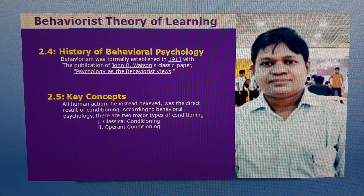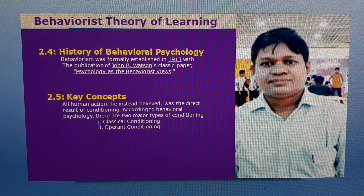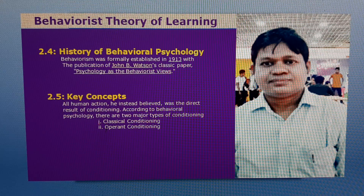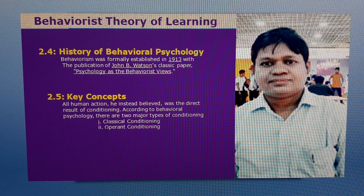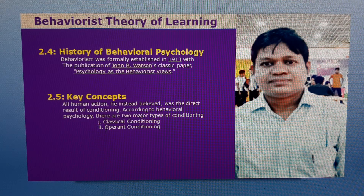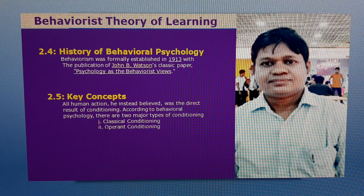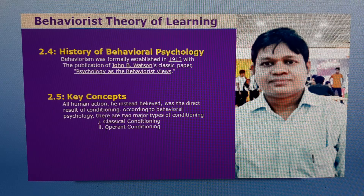Key Concepts of Behaviourism. There are several principles that distinguish behavioural psychology from other psychological approaches. Skinner referred to his own philosophy as radical behaviourism and suggested that the concept of free will was simply an illusion. All human action, he instead believed, was the direct result of conditioning. According to behavioural psychology, there are two major types of conditioning: number one, classical conditioning; number two, operant conditioning.